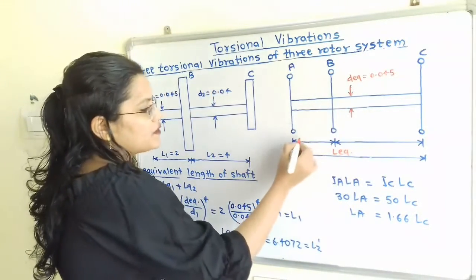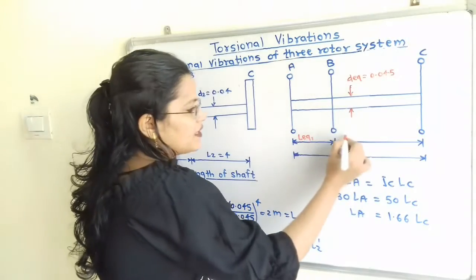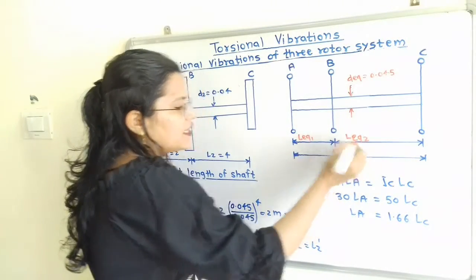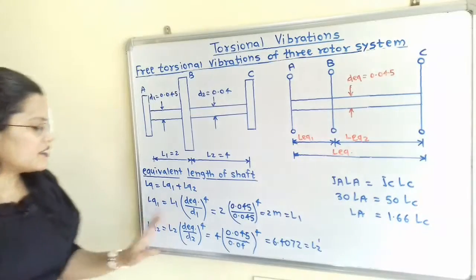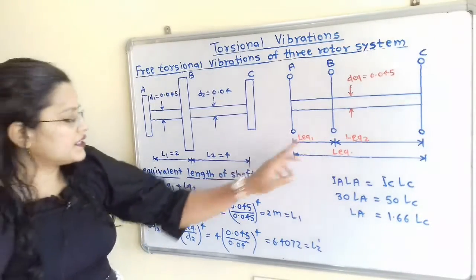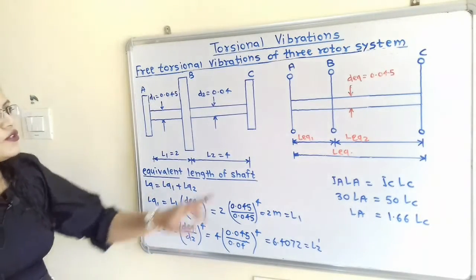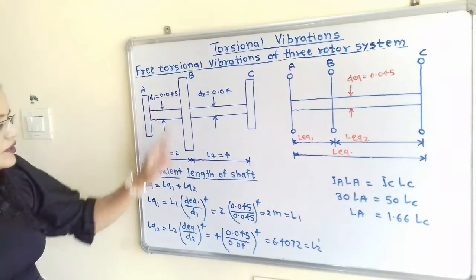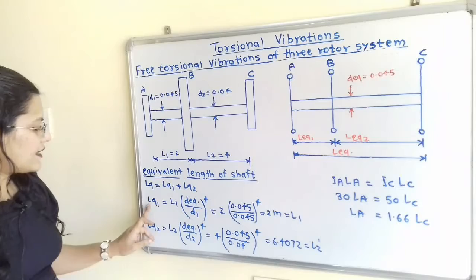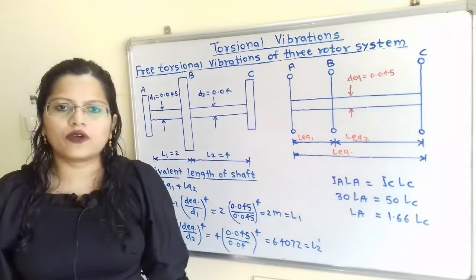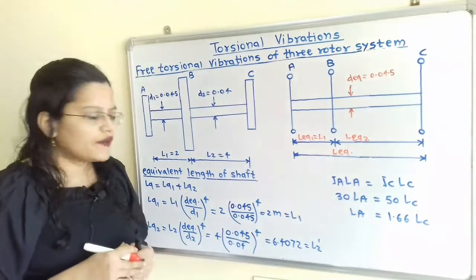There are two sections of the shaft, so we calculate L equivalent 1 and L equivalent 2. The formula is L_eq1 = L1 × (D_equivalent / D1)⁴. Since D equivalent is 0.045 and D1 is 0.045, the ratio is 1, so L_eq1 = 2 meter, which equals L1.